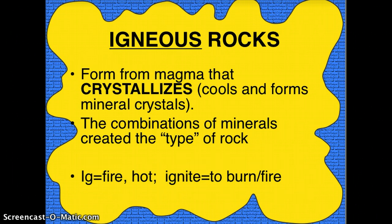Igneous rocks form from magma that crystallizes, which means the magma or lava cools and forms mineral crystals. Sometimes you can see those crystals because they're big; other times you cannot. The word igneous comes from 'ig,' meaning fire or hot, like to ignite something.